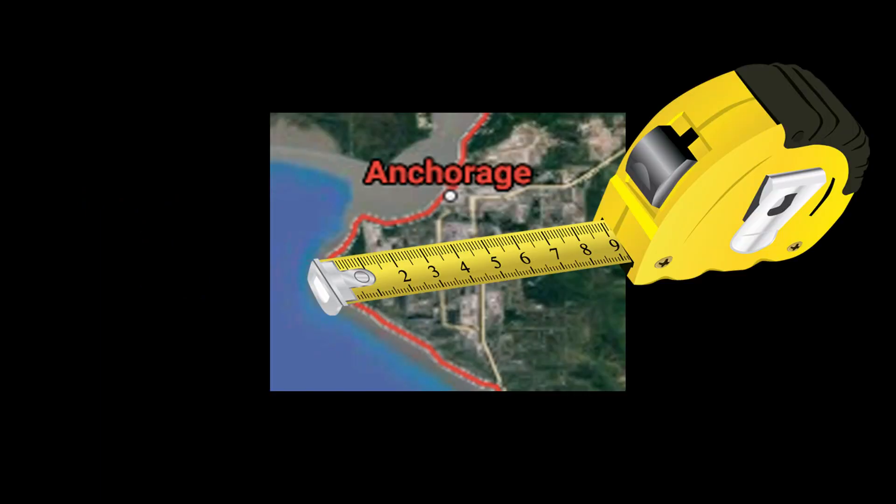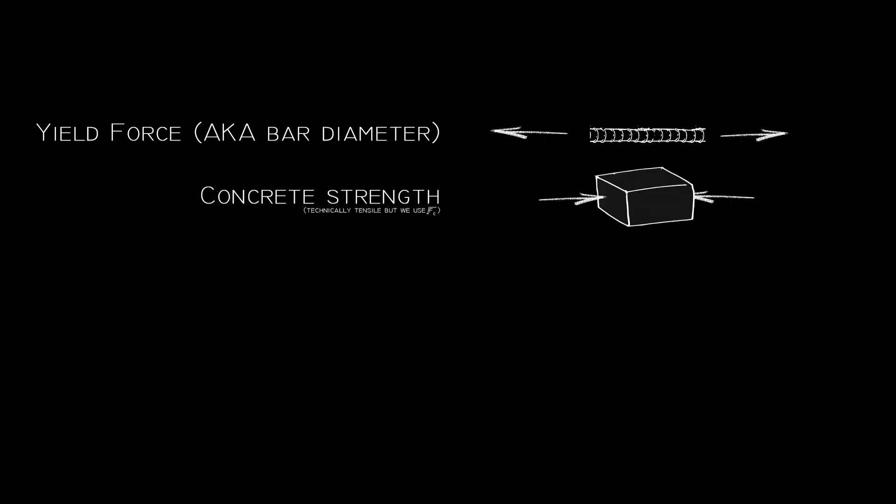So how does one calculate this anchorage length? Well, anchorage length is a function of the yield force of the bar. Sometimes this is hidden as the bar diameter because we assume it will take its full capacity. It is a function of the strength of the concrete,